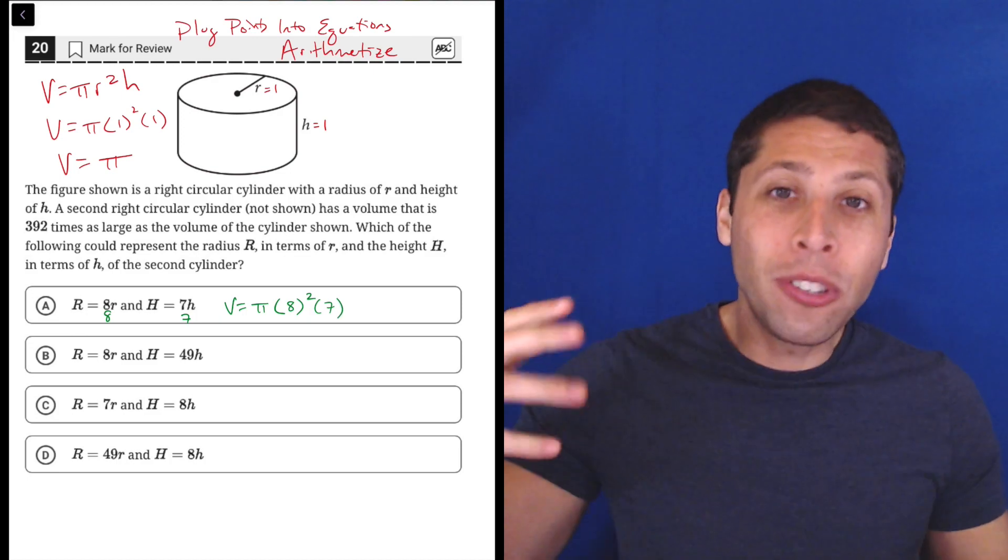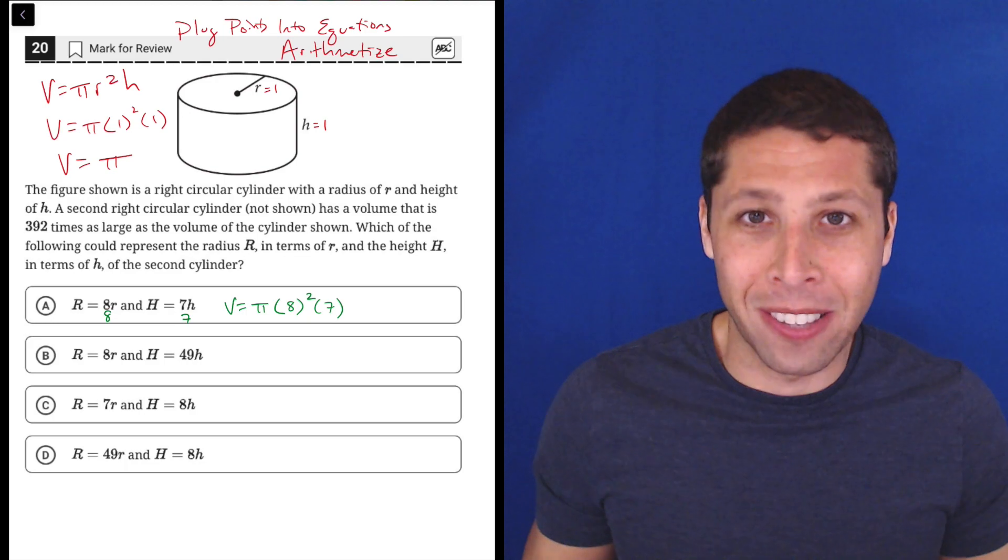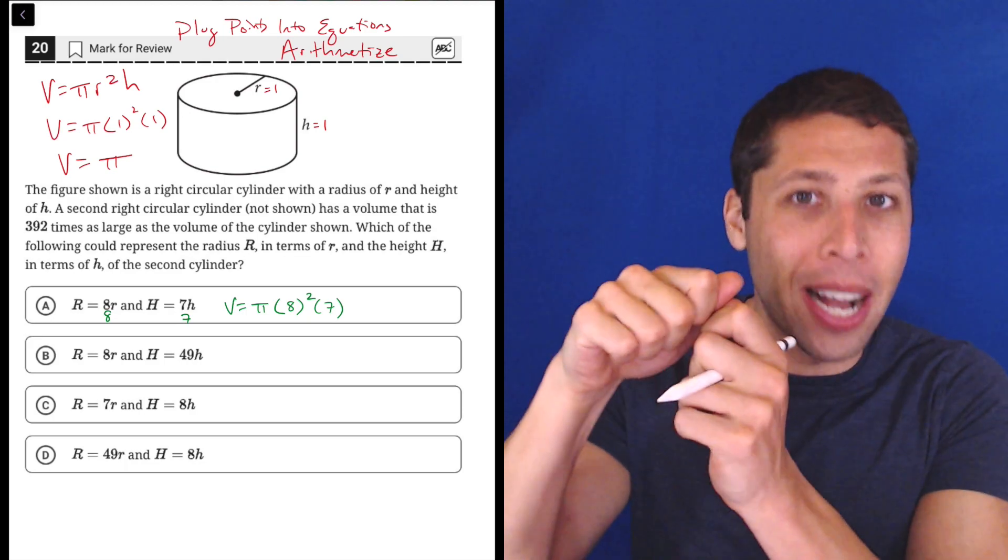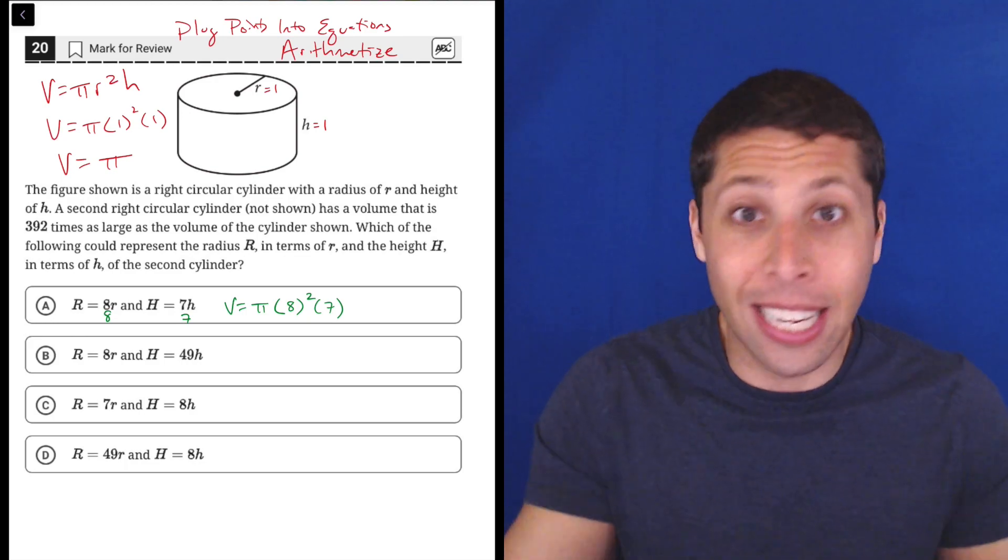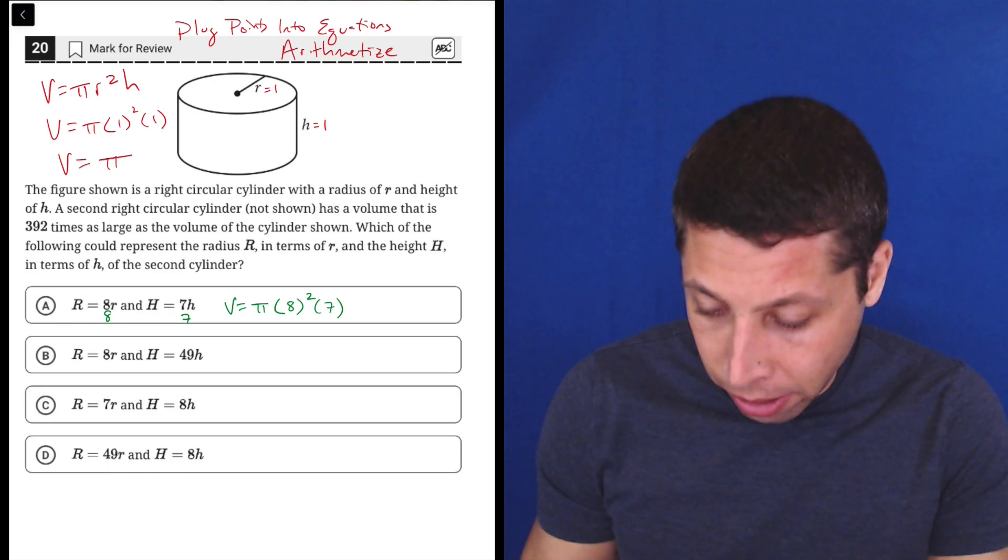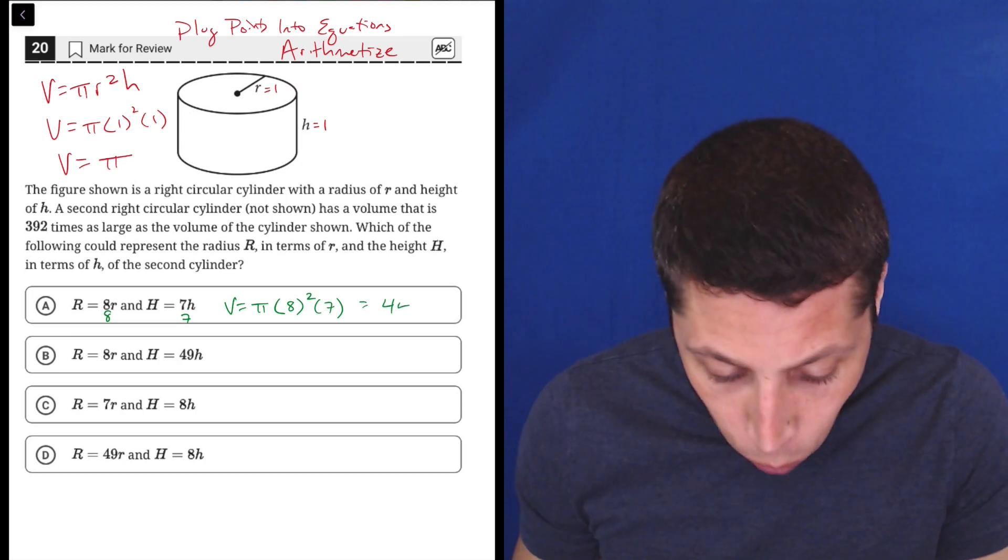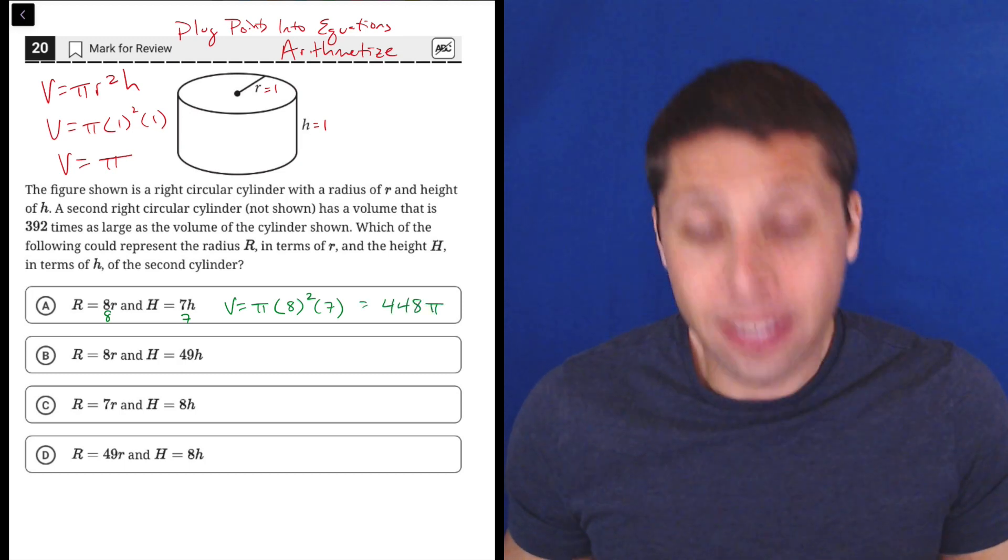So now we can just calculate the volume when we have a radius of eight and a height of seven. Now instead of dealing with all these variables, we just have numbers. We have actual dimensions that if we thought about it, we can just in our mind take out a ruler and measure the height in inches or whatever of a cylinder. So let's just do the math. Eight squared is 64. So 64 times seven is 448 times pi.